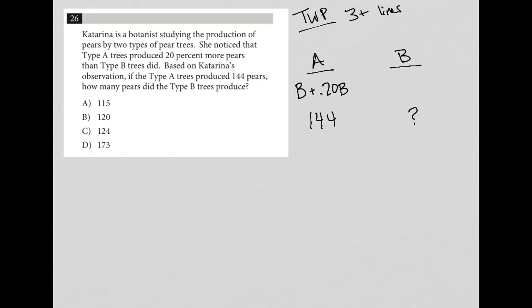So that's all the information I have. And you can see that most of the information is here in the A column. So I'm going to make an equation. I'm going to say that however many pears were produced by type B plus an additional 20% of that equaled 144 pears produced by tree A.